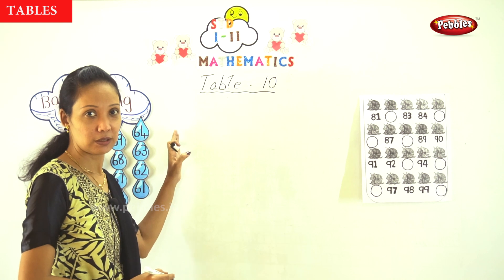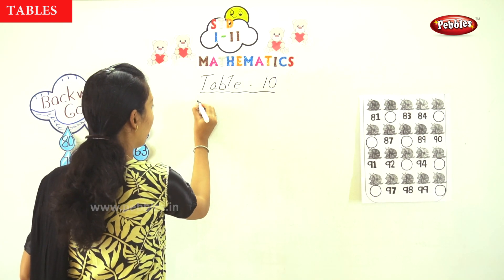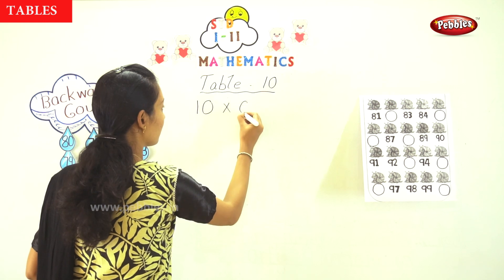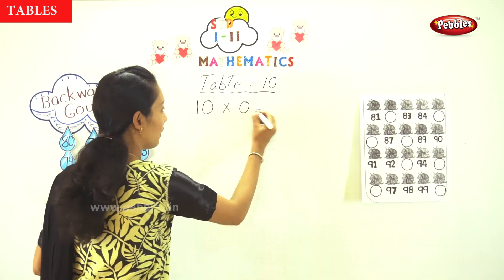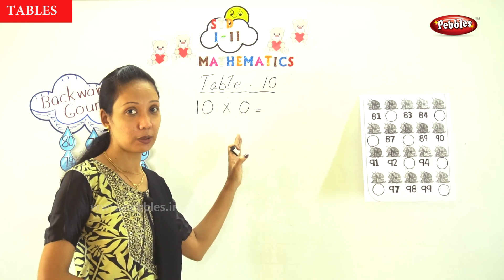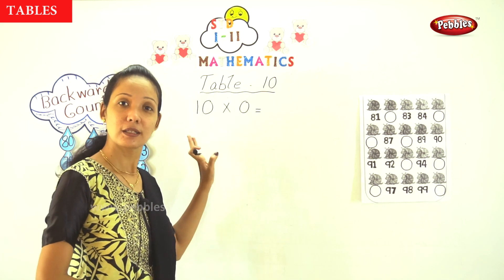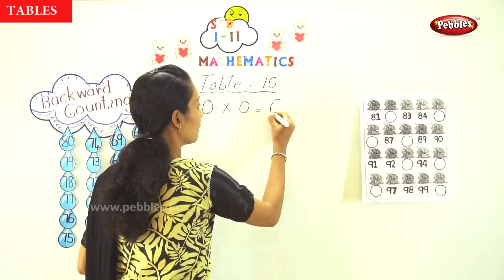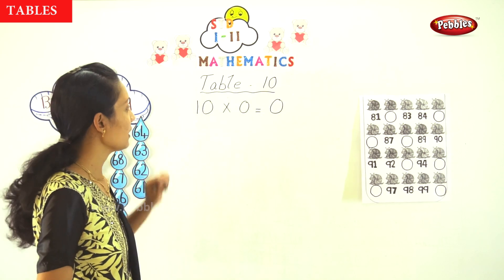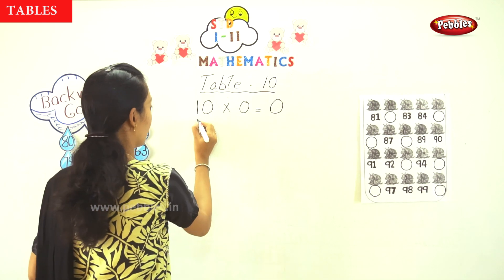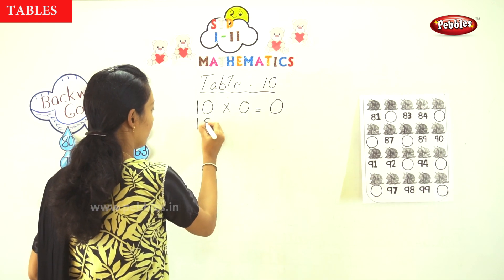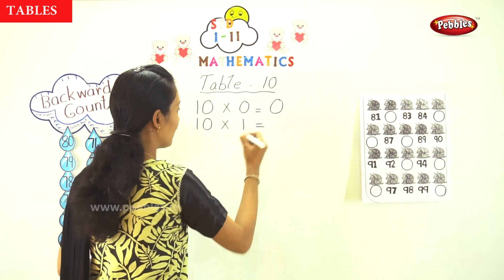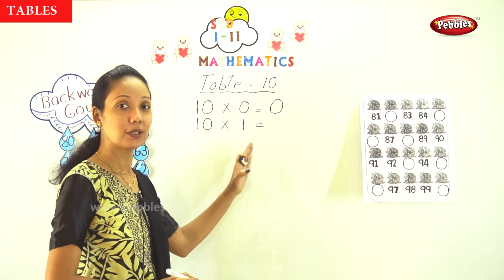Now, again we will start here. That is 10 into 0. Whatever number is multiplied into 0 will be 0 itself. Good, it is 0. Next one: 10 into 1. 10 into 1 is equal to 10.